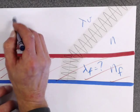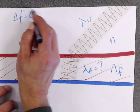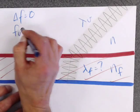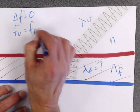So when you change medium, the frequency doesn't change. So the frequency in the vacuum is equal to the frequency in the thin film.